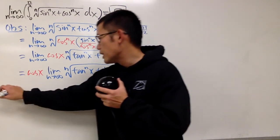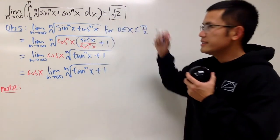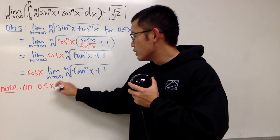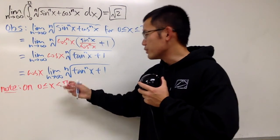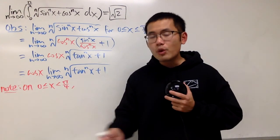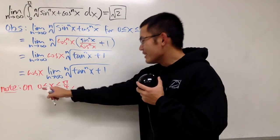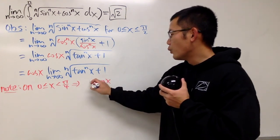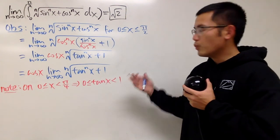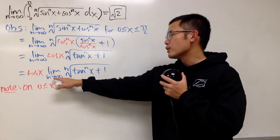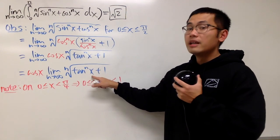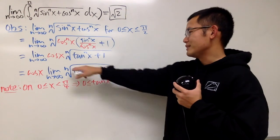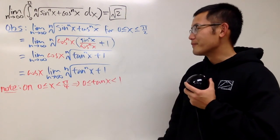Let me note that I'll break the interval into two pieces. The first piece is from 0 to π/4 (not including π/4, where tan(π/4) = 1 exactly). On this sub-interval, tan(x) is between 0 and 1. As n goes to infinity, tan^n(x) goes to 0, so we just have the nth root of 1 inside — which equals 1.